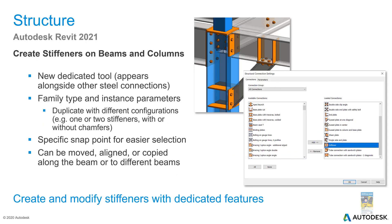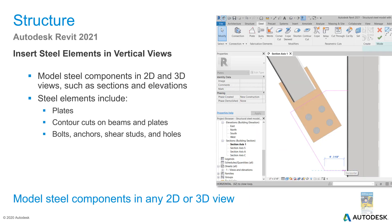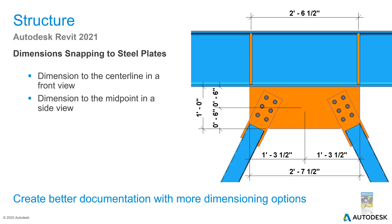When working with structural connection settings, you can now create stiffeners on beams and columns. You can also create steel elements in a vertical view like an elevation or section — for example, drawing a gusset plate directly in a 2D view. For dimensioning, you can now dimension to steel plates, snapping to the centerline in a front view and to the midpoint in a side view.